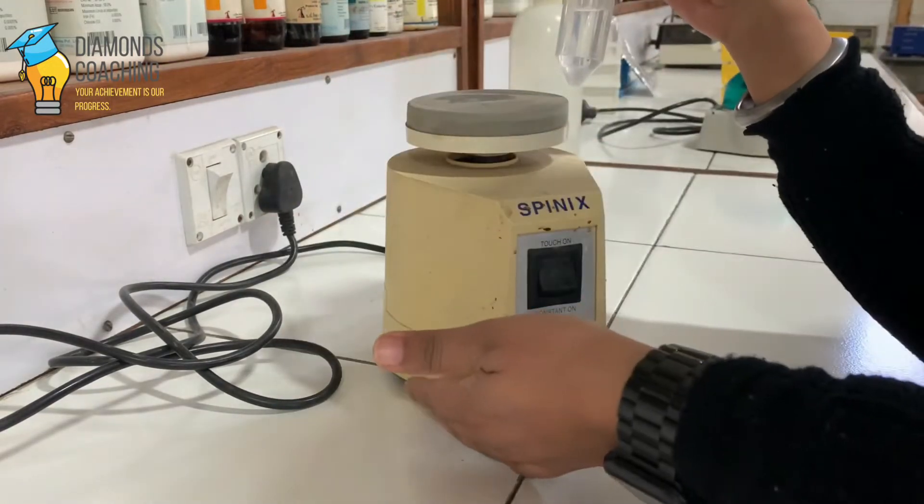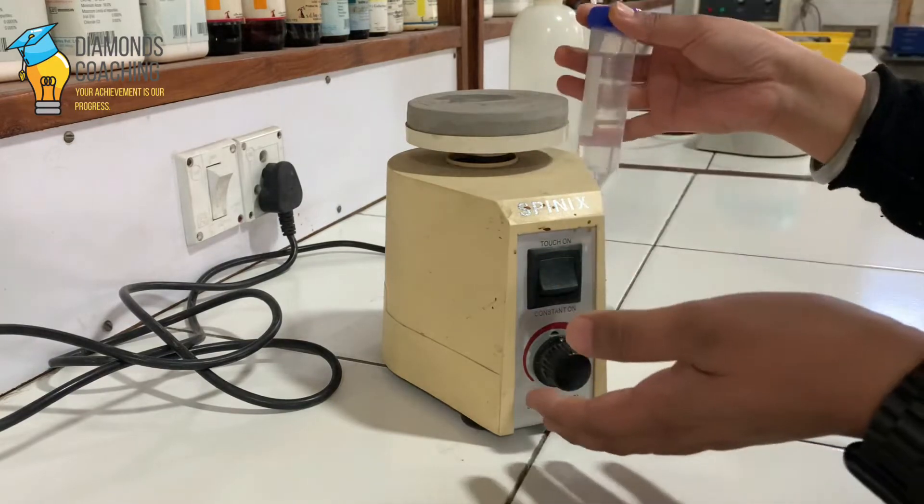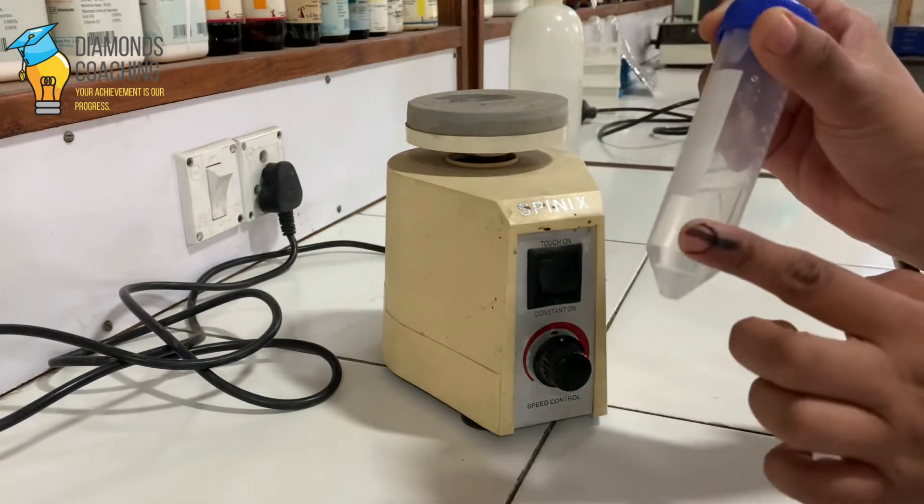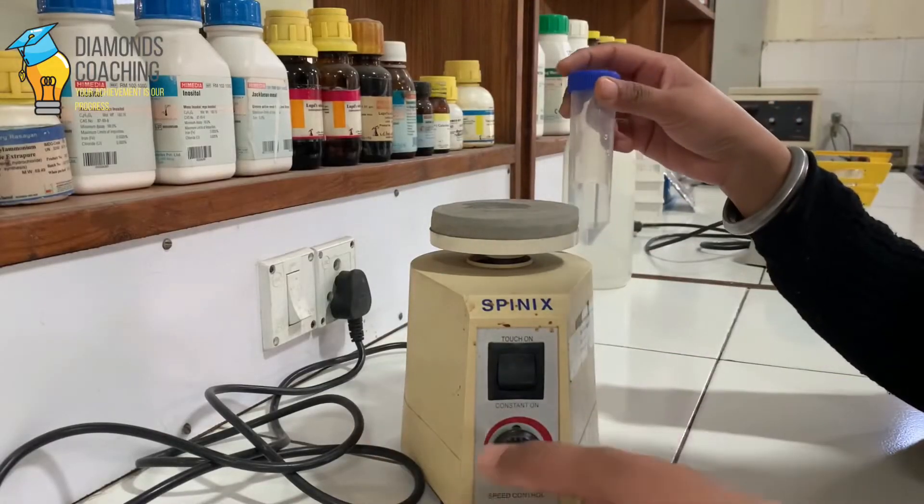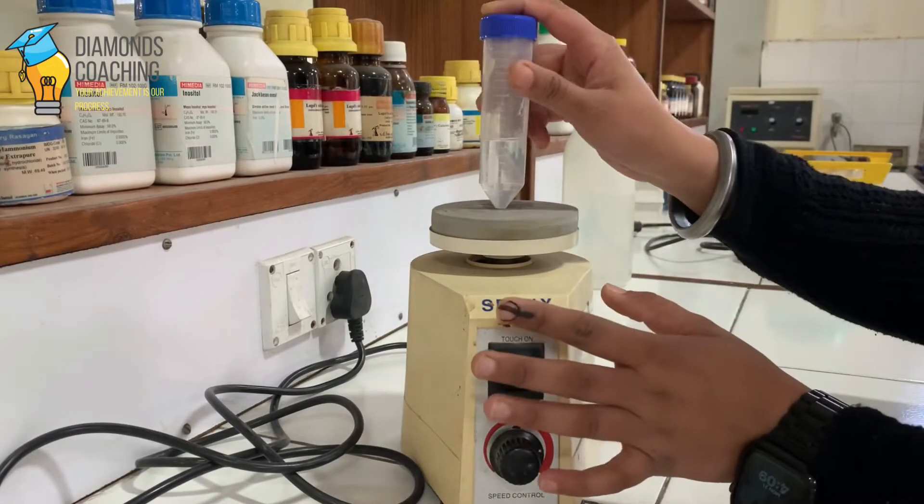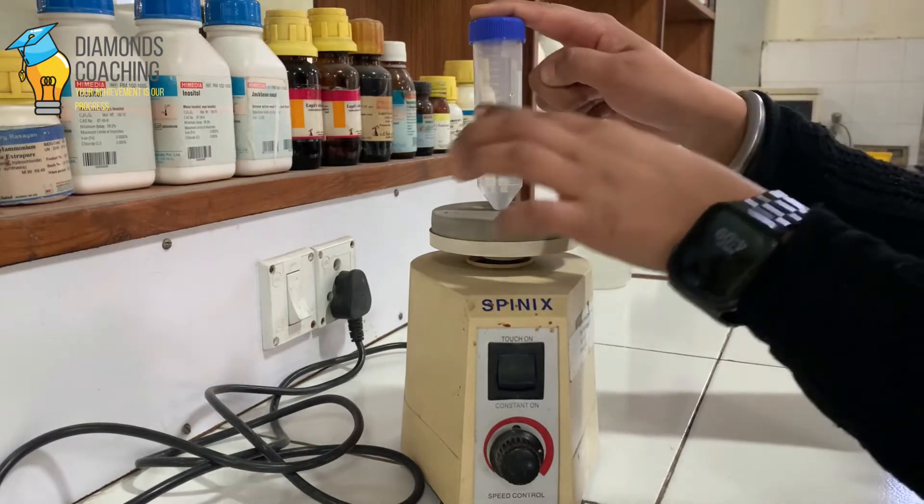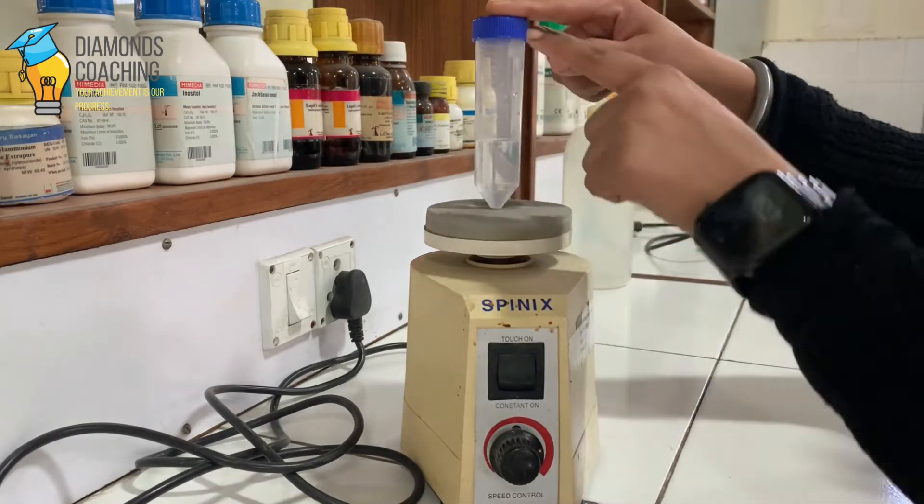This vortex shaker is used for that purpose where you can mix the contents of the vial or the test tube. So another thing is that if we place this vial here and if we hold this vial from the upper side, from here...